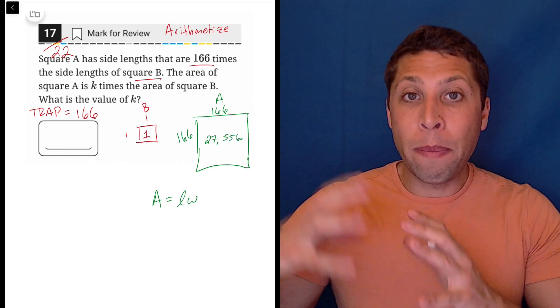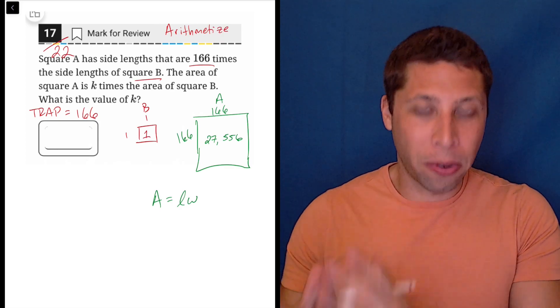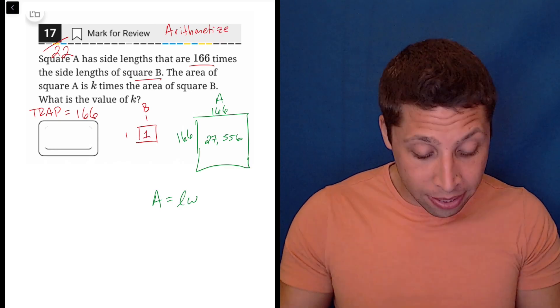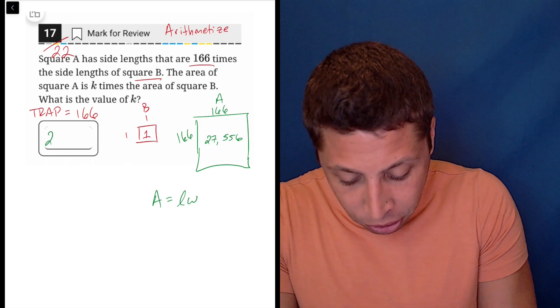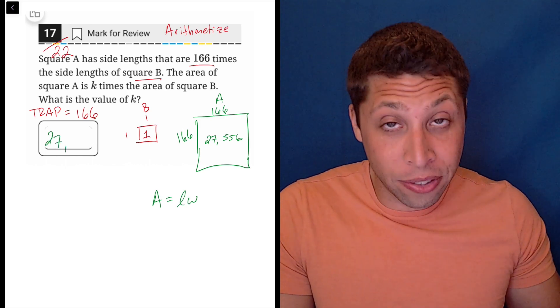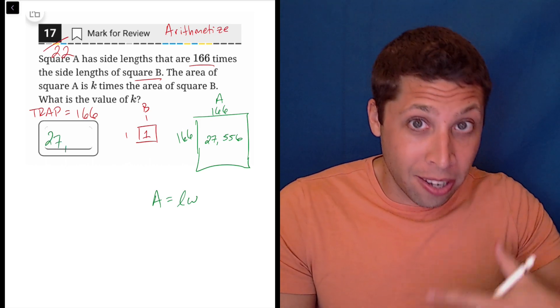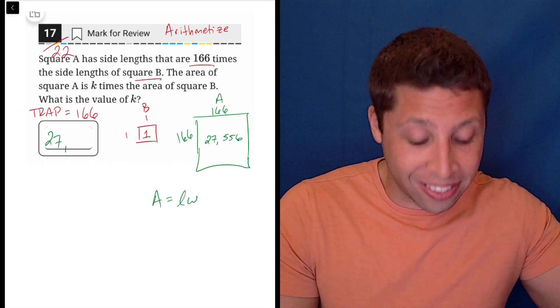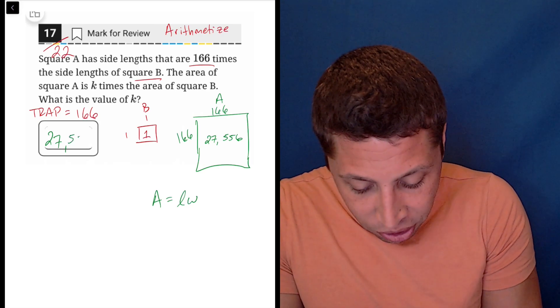Now because we picked the best possible number for square B, it's really easy to just say, okay, well that's just then the answer here. Because the area 27,556 is 27,556 times 1, so it is just kind of as is.